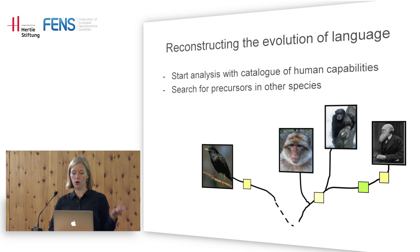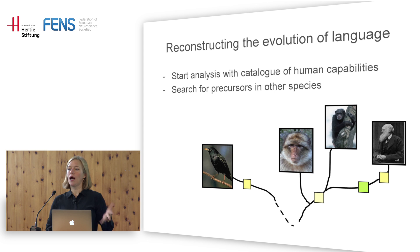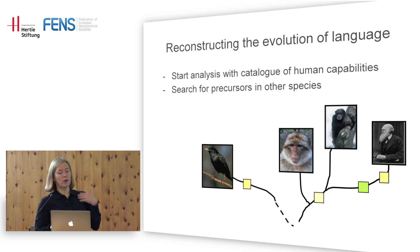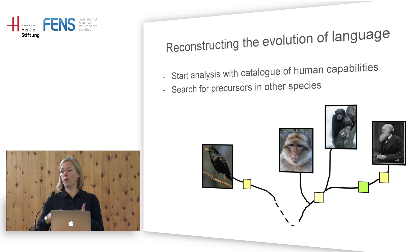This is what Sara Shettleworth called an anthropocentric research program: you start by listing capabilities identified in humans, then track back to see how much and in which form we find these in other organisms. Crucially, we must distinguish whether a trait found in another taxon is derived — specific to that taxon — or a convergence, such as vocal learning in songbirds, which evolved independently from vocal learning in primates.